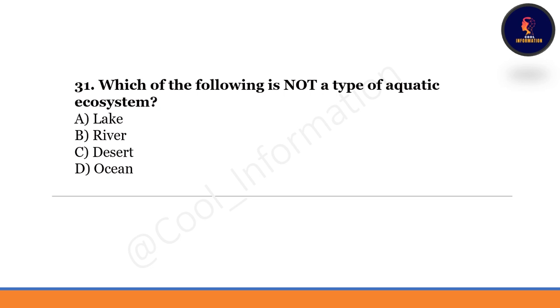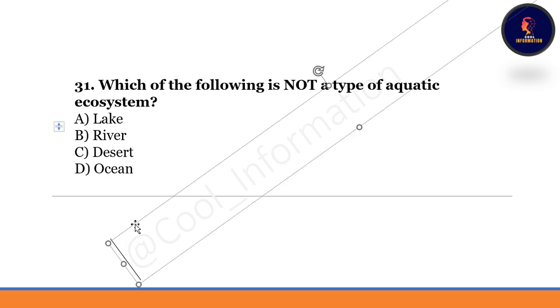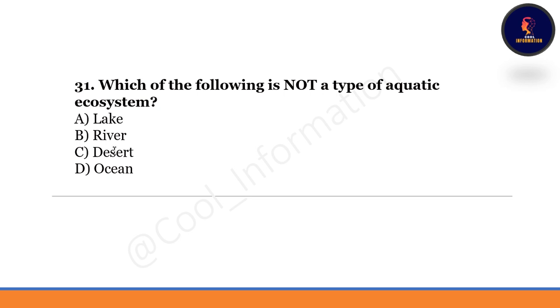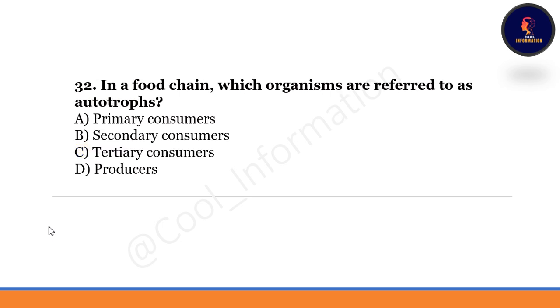Which of the following is not a type of aquatic ecosystem? Very simple question — desert is not a type of aquatic ecosystem. Option C is correct.